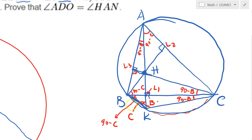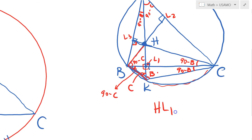So we have a very nice deltoid shape. BH equals BK because we have an isosceles triangle — the altitude bisects angle HBK, and both angles are 90 minus C each. Similarly, L1C bisects the corresponding angle in triangle HCK, giving another isosceles triangle. Since L1C is an altitude of the isosceles triangle HBK, it bisects the base, so HL1 equals L1K.